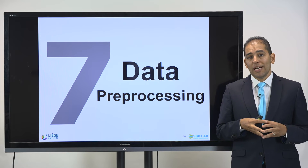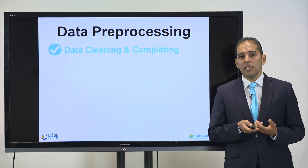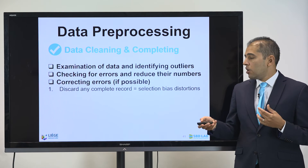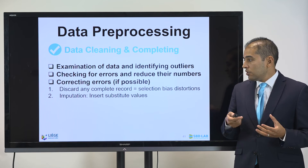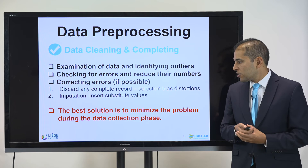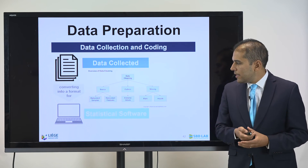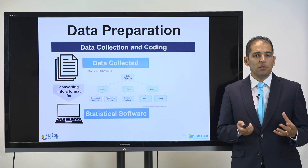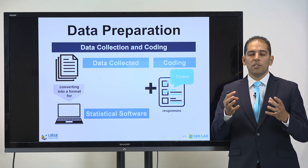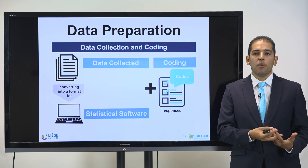Once we're done with cleaning the data, we can start data pre-processing. This involves data cleaning and completion: examining the data, identifying outliers, checking for errors, correcting errors if possible, discarding incomplete records, and looking at selection bias distortion. We can also do imputation by inserting substitute values based on different techniques. When completing the data, we use statistical software to convert the data into a readable format. One of the most important steps is coding the data — associating results with the different types of measurement and values. Only then are we ready to proceed to data analysis.